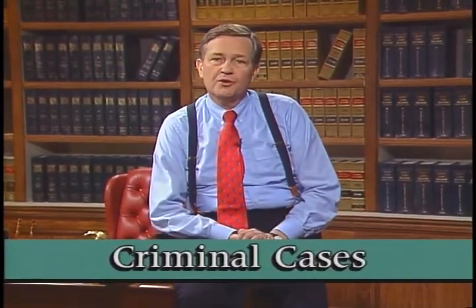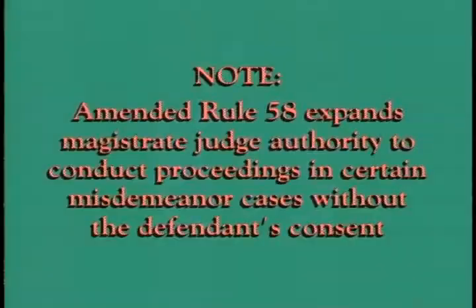If the defendant consents, a Magistrate Judge may conduct all the proceedings in a misdemeanor case, including presiding over a jury or bench trial, then enter judgment and sentence the defendant with the full authority of the District Court. In both felony and misdemeanor cases, even without consent, Magistrate Judges can conduct initial appearances under Rule 5 of the Federal Rules of Criminal Procedure, preliminary examinations or probable cause hearings under Rule 5.1, detention or bail hearings under Sections 3141 through 3144 of Title 18 United States Code, and arraignments where the plea is not guilty.